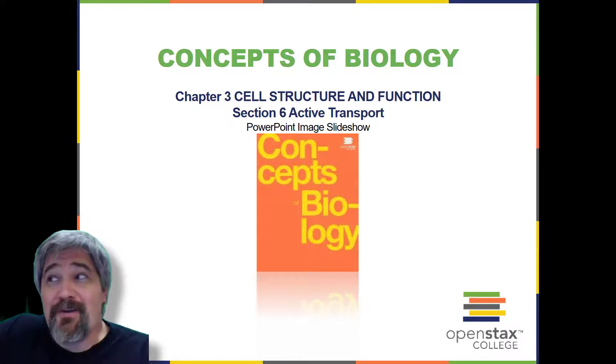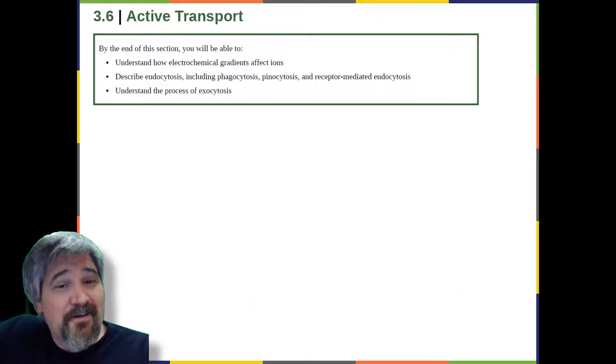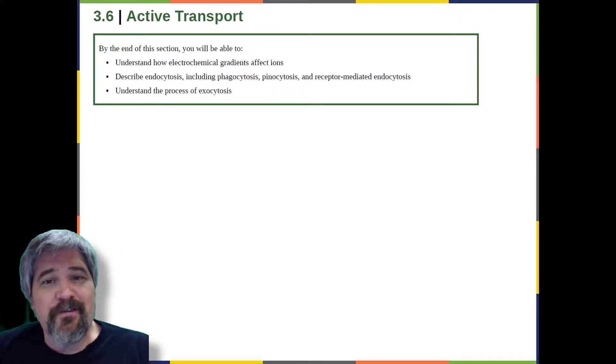Welcome back to Chapter 3, Section 6, Active Transport. By the end of this section, you will be able to understand how electrochemical gradients affect ions, describe endocytosis, including phagocytosis, pinocytosis, and receptor-mediated endocytosis, and understand the process of exocytosis.